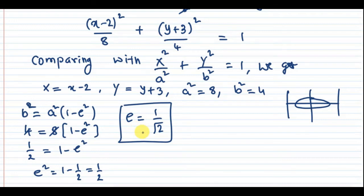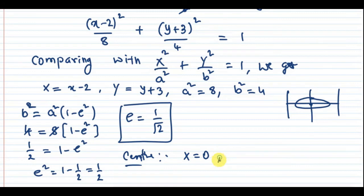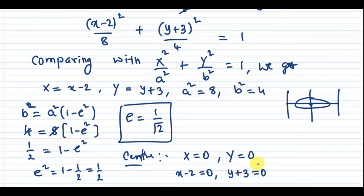For the center, set capital X = 0 and capital Y = 0. Since X = x - 2 = 0, we get x = 2. Since Y = y + 3 = 0, we get y = -3. Therefore center C = (2, -3).